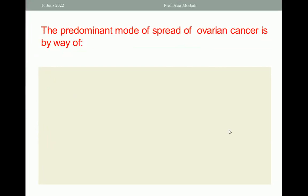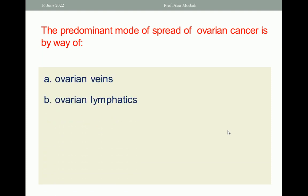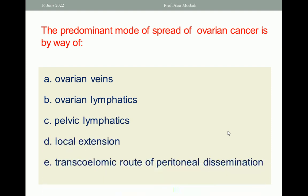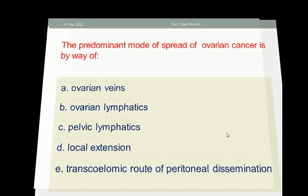The predominant mode of spread of ovarian cancer is by way of: A. ovarian veins; B. ovarian lymphatics; C. pelvic lymphatics; D. local extension; E. transcelomic route of peritoneal dissemination. The one best response here is E — transcelomic route of peritoneal dissemination.